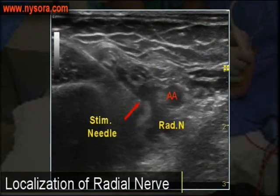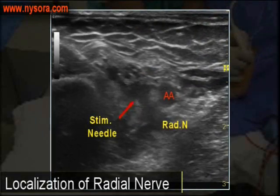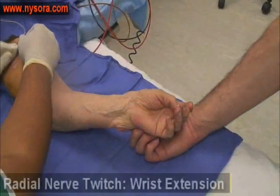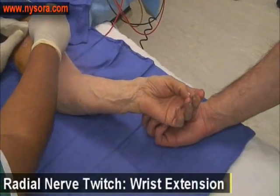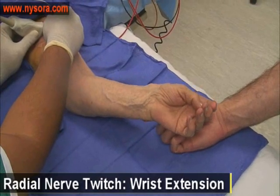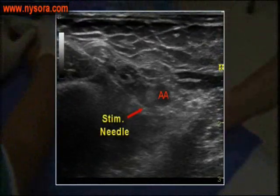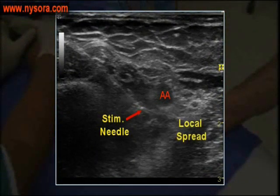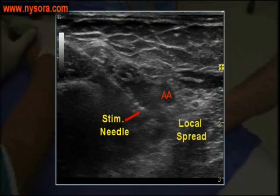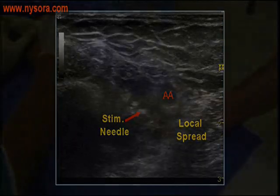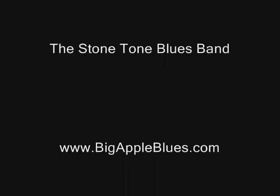This sequence shows the needle approaching the radial nerve, which is posterior to the axillary artery. Local anesthetic is also given near the radial nerve.